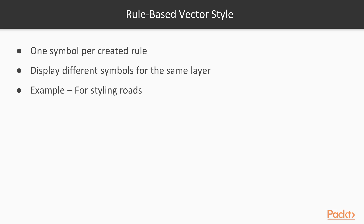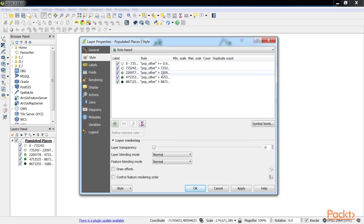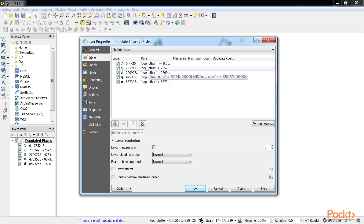The rule-based vector style applies one symbol per created rule, and can apply maximum and minimum scales to toggle symbol visibility. This vector style is the best when you want a different symbol based on different expressions, or when you want to display different symbols for the same layer at different map scales. For example, if you are styling roads, a rule could be set to make roads appear as thin lines when zoomed out, but when zoomed in, the thin lines will disappear and be replaced by thicker lines that are more scale appropriate. In layer properties, change the style to rule-based.